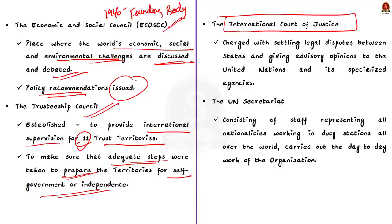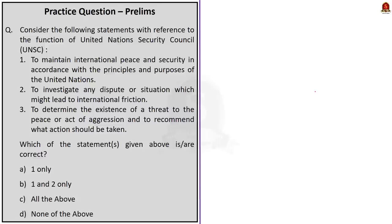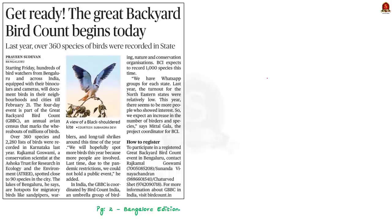The International Court of Justice is charged with settling legal disputes between states and giving advisory opinions to the United Nations and its specialized agencies. The UN Secretariat, consisting of staff representing all nationalities working in duty stations all over the world, carries out the day-to-day work of the organization. The Secretariat services the other principal organs of the United Nations and administers the programs and policies established by them. You can utilize these points while answering your prelims questions.